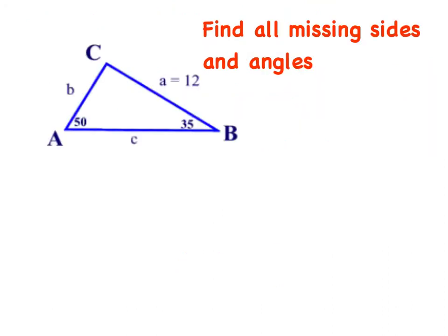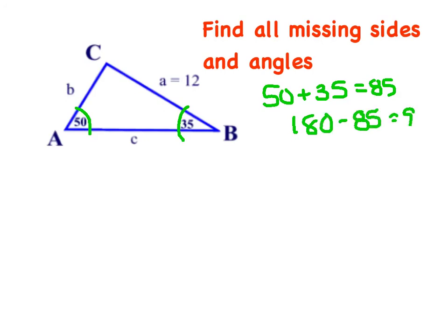In our last example, we want to find all the missing sides and angles. They gave us two angles, and we can easily get that third angle — all three angles add up to 180. So 50 plus 35 is 85, and 180 minus 85 gives us 95. I've easily found the third angle. Now I've got to get sides B and C. Law of cosines means side-angle-side, but I have a side and an angle and no other sides — so I don't have side-angle-side. I think we've got opposites, and when you have opposites, that's the law of sines.